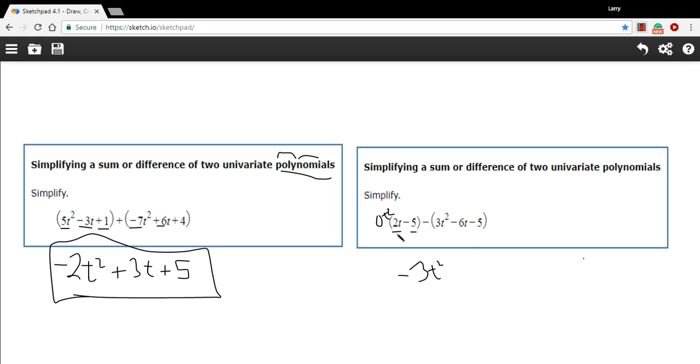Let's do the t-term now. We've got 2t minus a negative 6t. So you've got to be careful here. That's a double negative. So 2 minus a negative 6 is the same as 2 plus 6. So this is actually going to be a positive 8t.